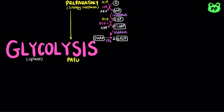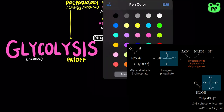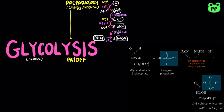The second half of glycolysis is known as the energy payoff phase. It begins with two molecules of glyceraldehyde-3-phosphate, which are oxidized then phosphorylated by the enzyme glyceraldehyde-3-phosphate dehydrogenase. The oxidation step is coupled with the reduction of NAD to NADH, and the phosphorylation step incorporates a phosphoryl group from inorganic phosphate. Two glyceraldehyde-3-phosphates are converted to 2 molecules of 1,3-bisphosphoglycerate, a very high-energy compound, with most free energy conserved by the formation of an acyl phosphate group at carbon-1.